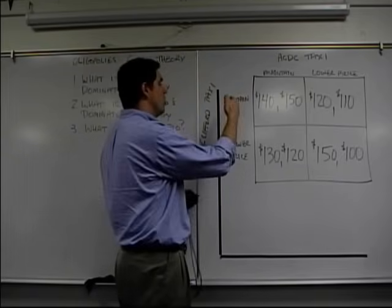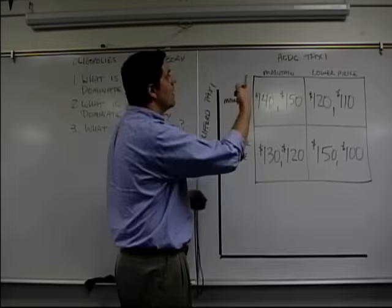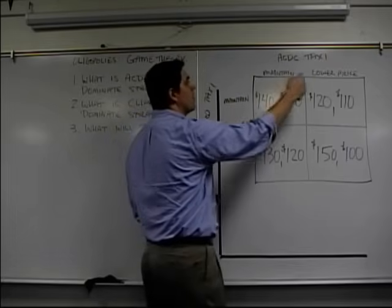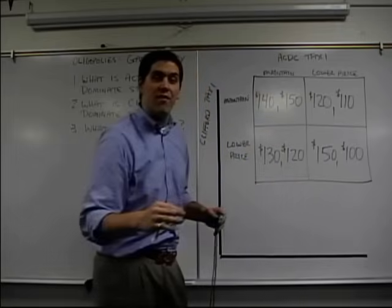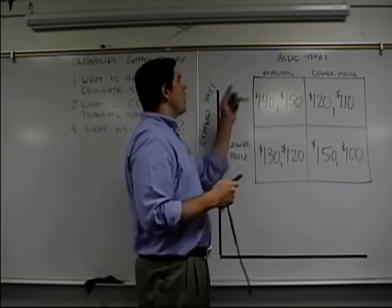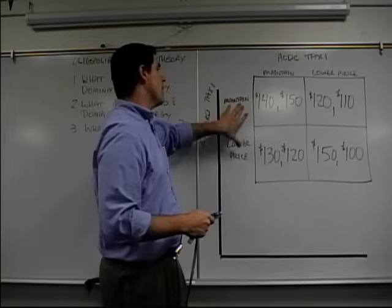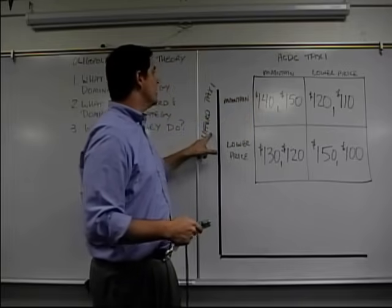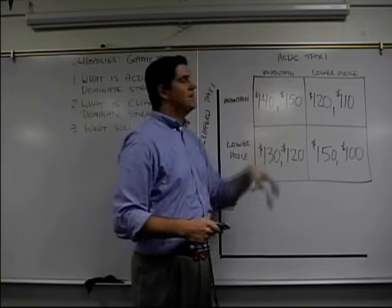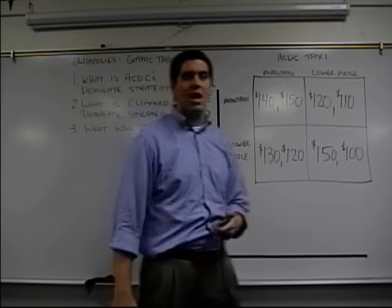Good. Clifford Taxi has two things they can do: maintain their price or lower their price. ACDC, same thing. Maintain price and lower their price. These numbers in here tell them how much of a profit they're going to make, based on what the other guy is going to do. In this situation, the numbers on the left are Clifford Taxi's. The numbers on the right are ACDC Taxi's. If that makes sense to you, let's go ahead and start this up.